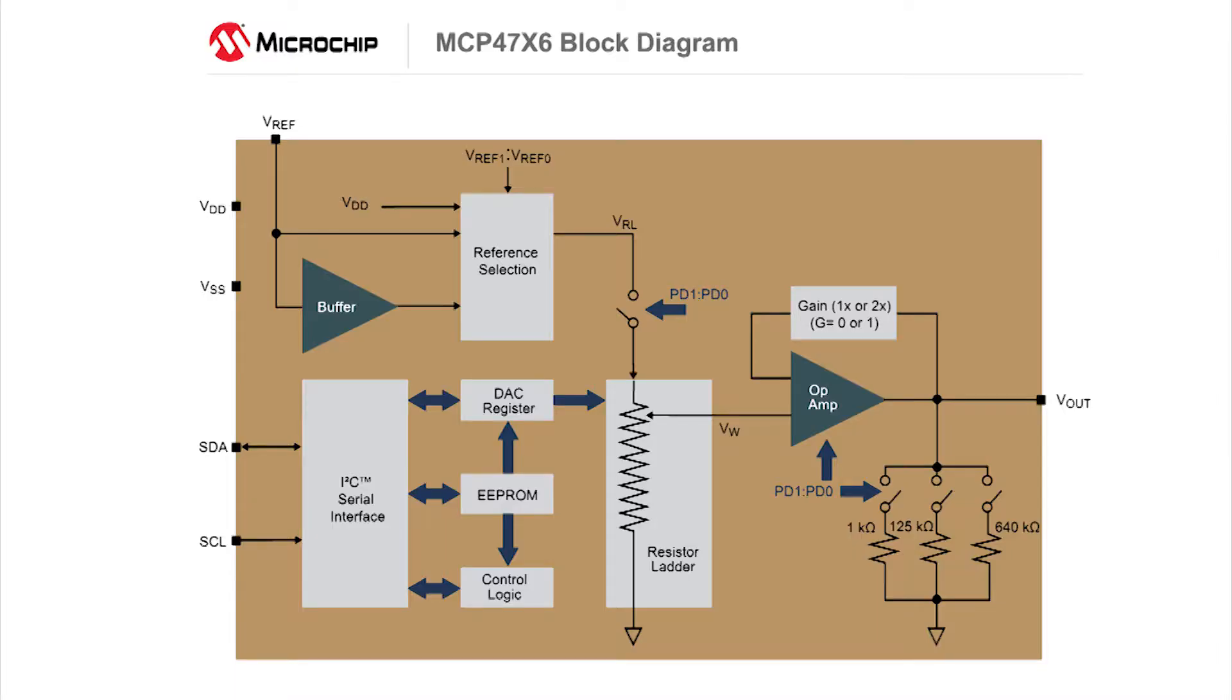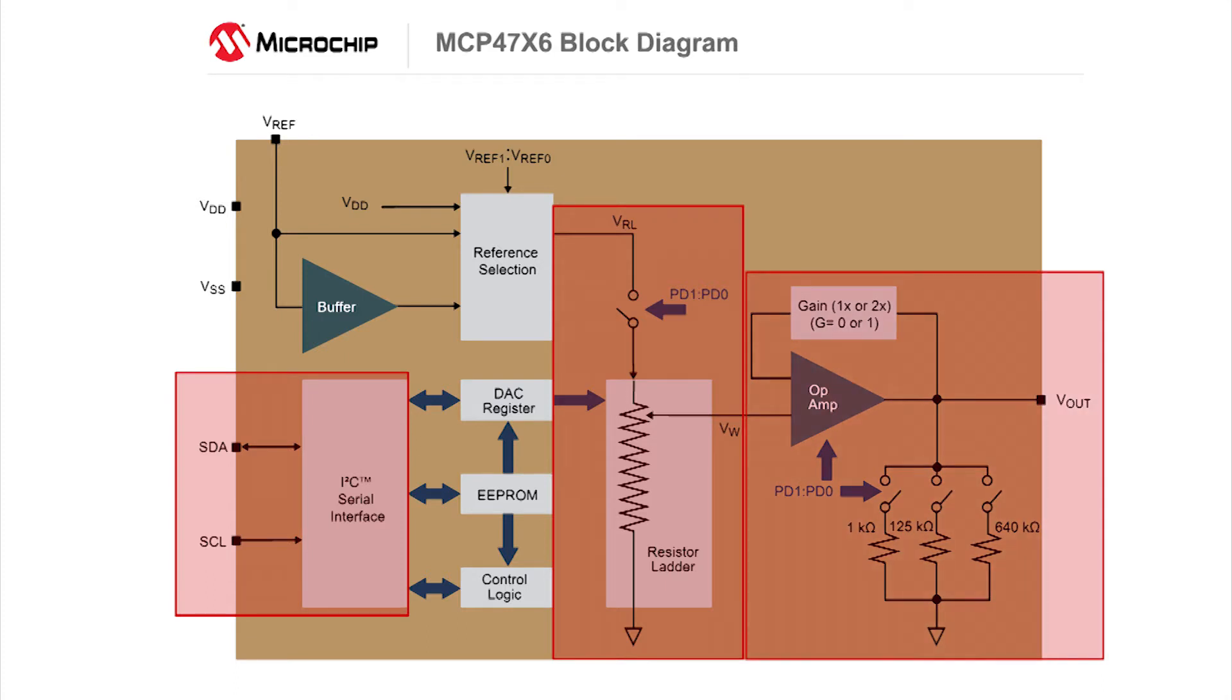This is a simplified block diagram of a digital to analog converter, or DAC. A DAC is a device that converts a digital signal to a corresponding analog voltage. There is a digital interface to control the operation of the DAC, a resistor string where typically the ends are tied to VREF and VSS, although there are some configurations where the high side is tied to the internal VDD signal. The wiper is connected to the input of a unity gain operational amplifier. In this case, the DAC output voltage is in the range of VREF to VSS.